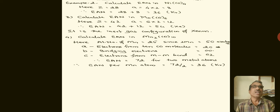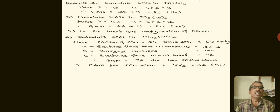Similarly, calculate the EAN of nickel tetracarbonyl. The atomic number of nickel is 28. Four carbonyl groups each donate 2 electrons, so A = 8. Therefore, EAN = 28 + 8 = 36, which is the atomic number of the nearest noble gas, krypton.